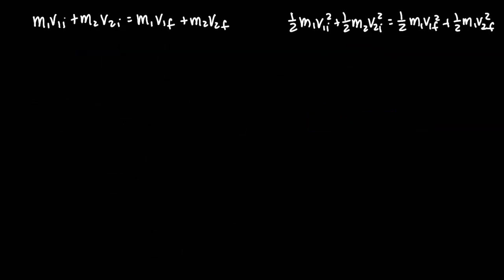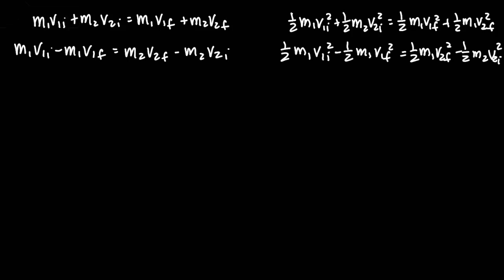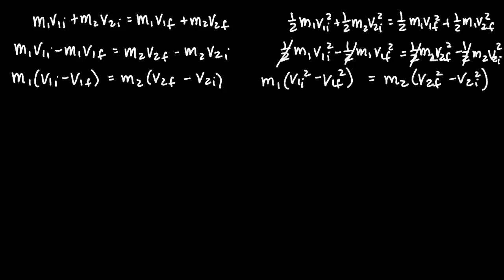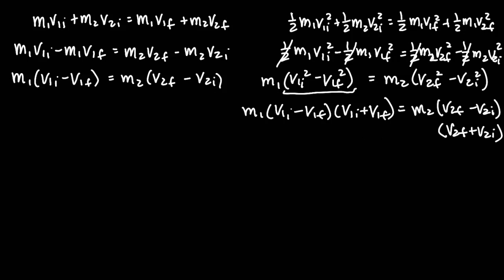Now I want to show you how we derived the shortcut equation. First, we write down the conservation of momentum equation and the equation showing kinetic energy is conserved. We move all m1 terms to the left and m2 terms to the right for both equations, then factor out m1 on the left and m2 on the right. For the kinetic energy equation, the one-halves cancel and we factor out the masses. Notice that the KE side is a difference of squares, so we factor it as (v1_initial minus v1_final)(v1_initial plus v1_final).